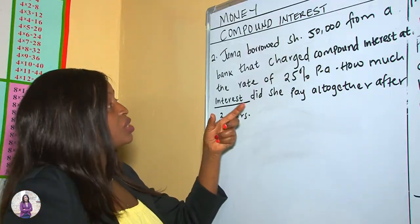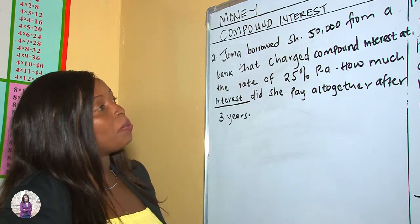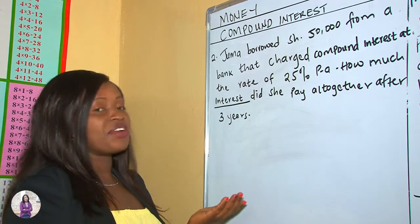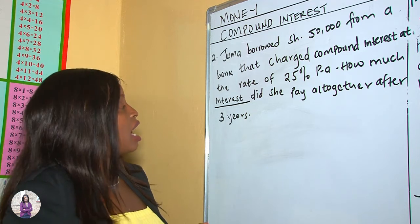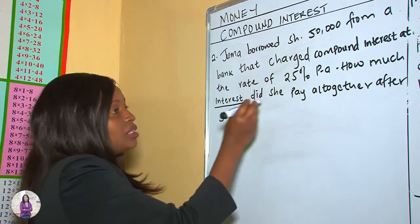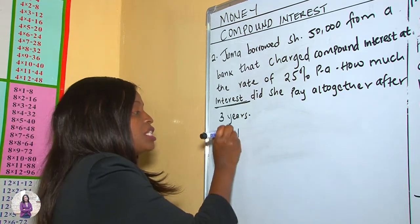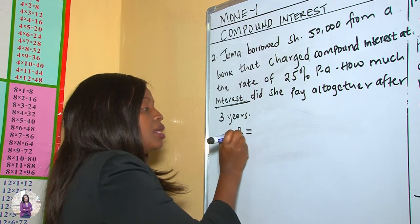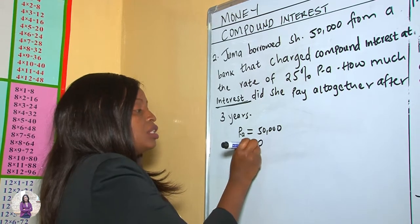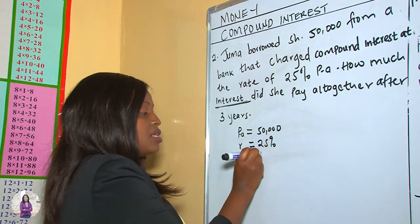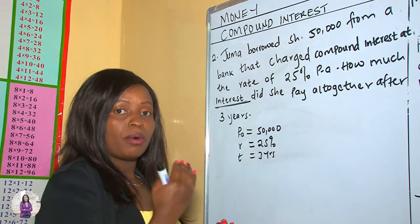Let's look at our next example. Juma borrowed $50,000 from a bank that charged compound interest at a rate of 25% per annum. How much interest did she pay altogether after three years? We are given: principal amount = $50,000, rate = 25%, and time = 3 years. We will calculate the compound interest on a yearly basis.